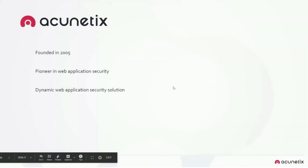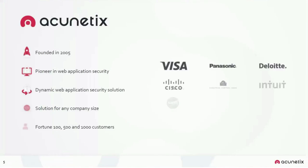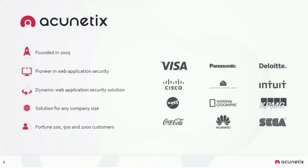About Acunetix — we were founded in 2005 and are pioneers in web application security. We specialize in web application security. Acunetix is primarily a DAST black box web scanner, which means we replicate the steps a hacker would take to attack your website. With more than 5,000 customers worldwide, Acunetix is relied upon globally by individual consultants and security specialists, all the way up to large enterprises including well-known Fortune 500 firms.